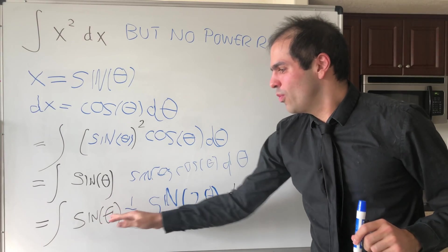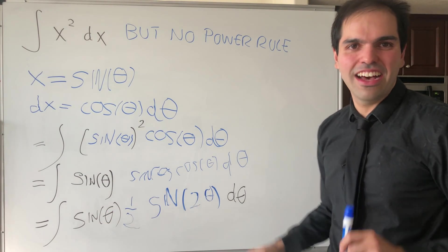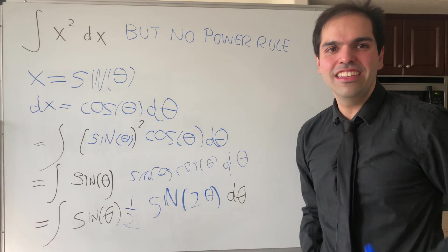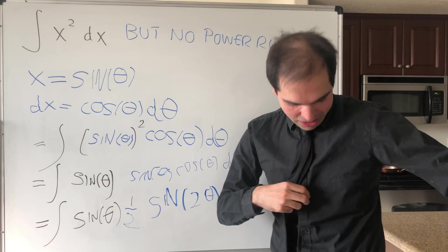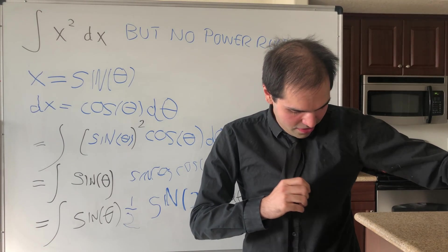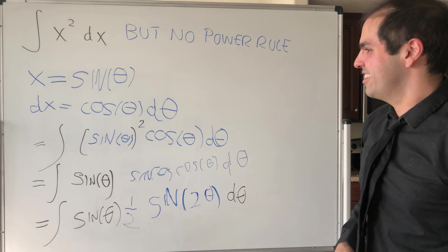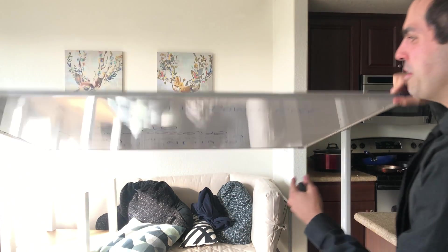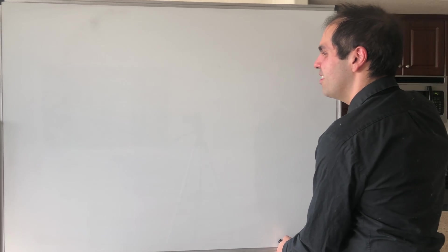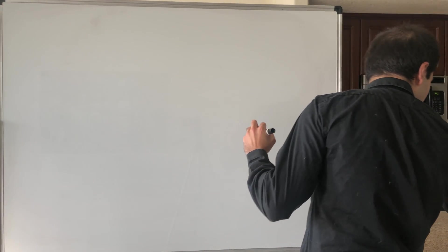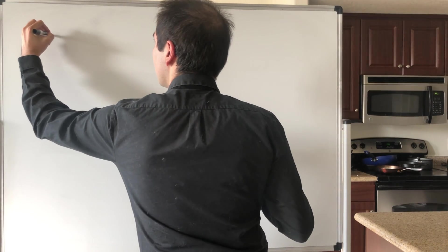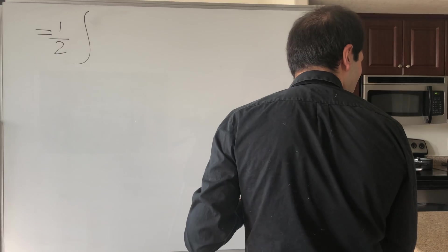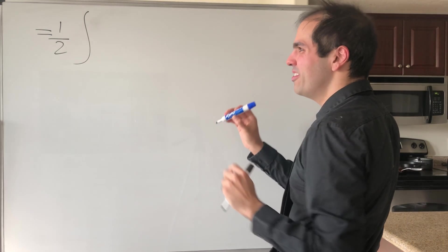But then that becomes one half sine of theta, sine of two theta. And it turns out you can write this as an addition thing. Let me check on my shirt where it is. Well, it isn't on my shirt, but it's okay, I guess. And then what we get becomes one half times still the integral of one half.